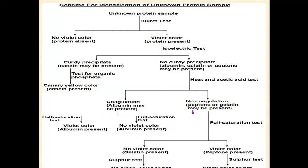In case of heat and acetic acid test showing no coagulation, your sample may be peptone or gelatin. To confirm which one it is, you carry out the full saturation test. In the full saturation test, if you get no violet color, then gelatin may be present. To confirm gelatin, you carry out the sulfur test — if you get no black color or precipitate, then gelatin is present and confirmed.